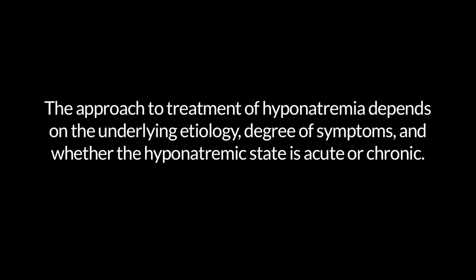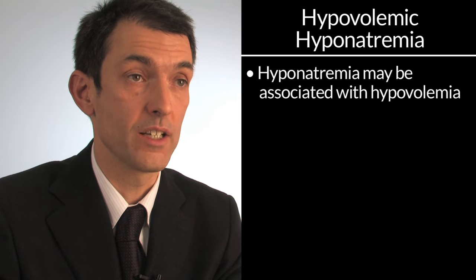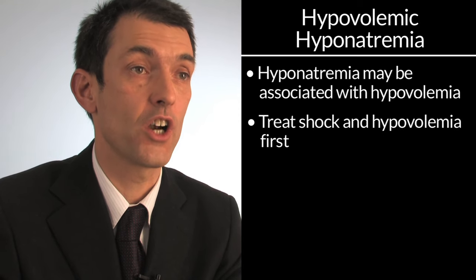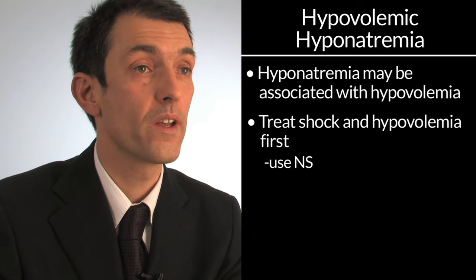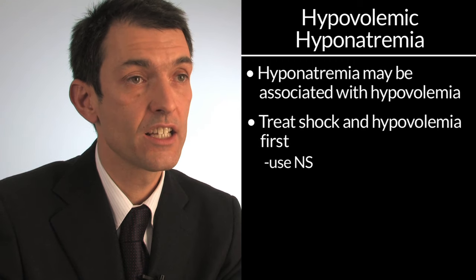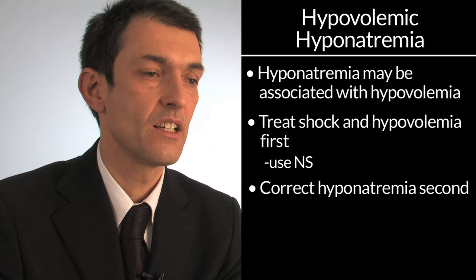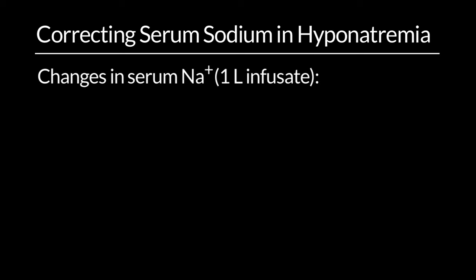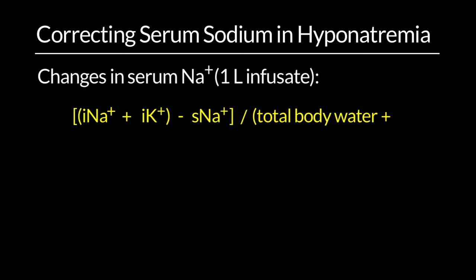The approach to treatment depends on the underlying etiology, degree of symptoms, and whether the hyponatremic state is acute or chronic. When hyponatremia is associated with hypovolemia, the first priority is to correct the volume status with normal saline, then focus on correcting hyponatremia. You can predict changes in serum sodium with one liter of infusate using this formula: (sodium in infusate + potassium in infusate − serum sodium) divided by (total body water + 1 liter).